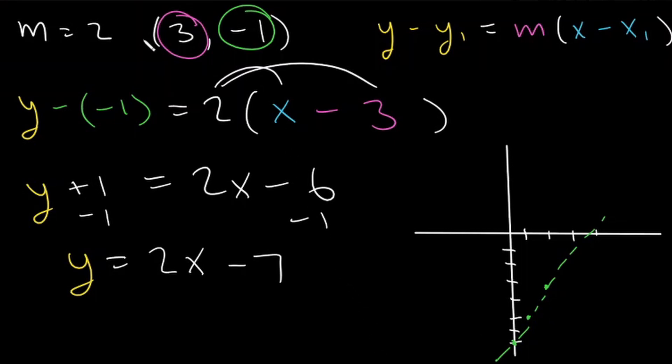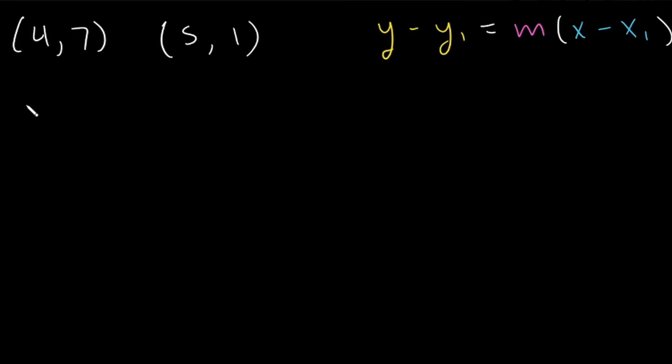So just with a single point and the slope, we were able to determine the slope-intercept form of our linear equation. Now what if we were given the two points (4, 7) and (5, 1)? How could we find the equation? Well, first we need to solve for our slope. So let's do that.